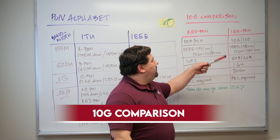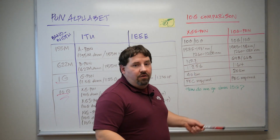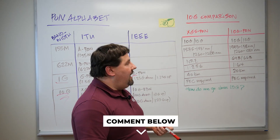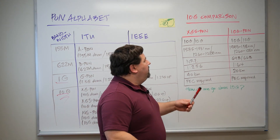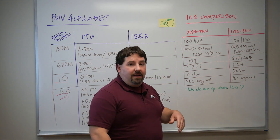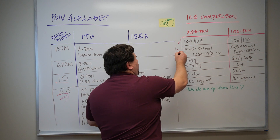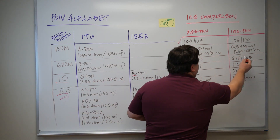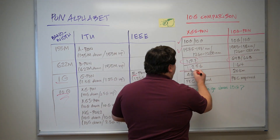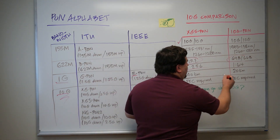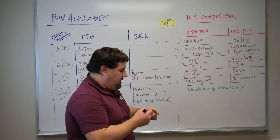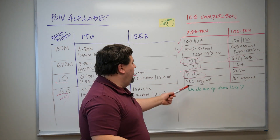I've selected XGS-PON and 10G-EPON for this comparison. Their downlink and uplink speeds are the same, and they operate in the same wavelength. There are some differences though, such as modulation — NRZ on one side versus Ethernet modulation on the other. Then there's maximum splitting: the ITU standard allows up to 256, while IEEE is at 64. And for maximum reach, we see 40 kilometers versus 20 — twice as much on the ITU side.